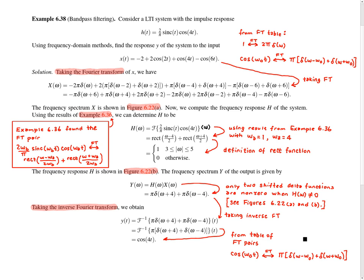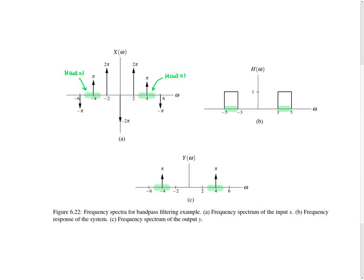Lastly, I'm going to jump to the next page of the example, which shows plots of X, Y, and H. Big X is shown in the top left, big H is shown in the top right, and big Y is shown in the bottom center. If we consider the top two graphs for X and H, we can graphically determine Y — which is simply the product of X and H — by visually multiplying the two graphs. Because H is only non-zero in the intervals marked in green, when we multiply H times X we only pick up the two terms involving shifted delta functions shifted by minus 4 and plus 4, which results in the graph shown in the bottom center.